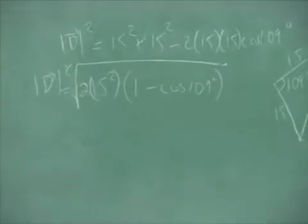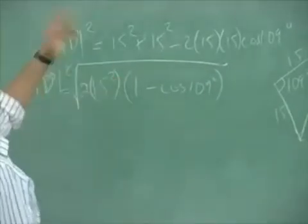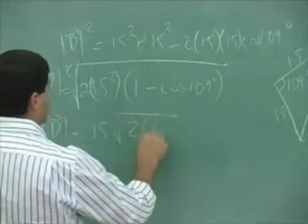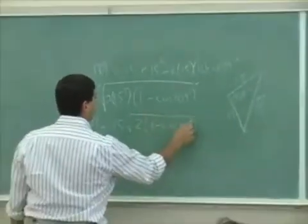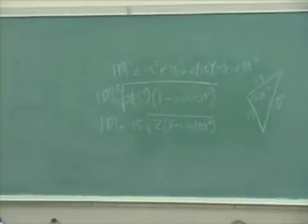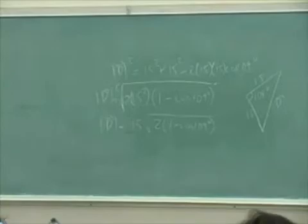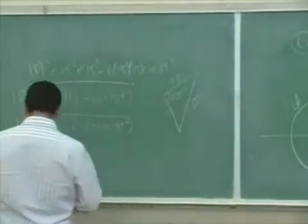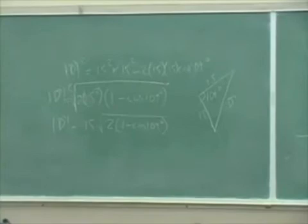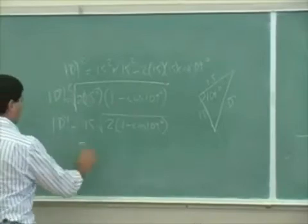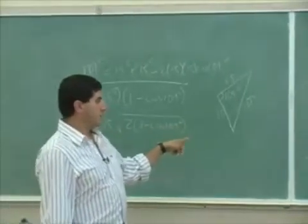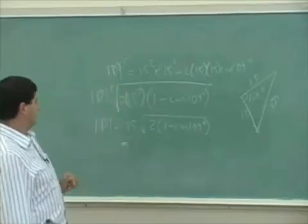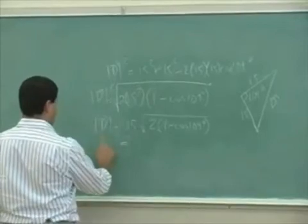So magnitude of d is square root of 2 times 15 squared. Well, the 15 squared even comes out. So magnitude of d comes out to be 15 times radical 2 times 1 minus cosine of 109. It's a little quicker than that, but it should give you the same answer too. When we calculate the velocity, it should be less than the average speed. Here, this is the magnitude of the displacement.